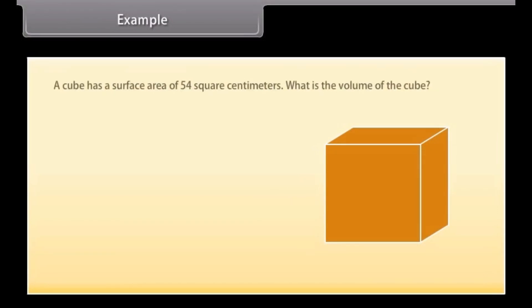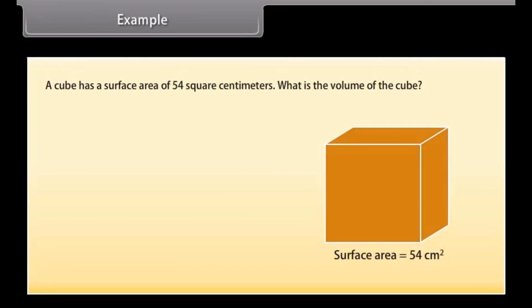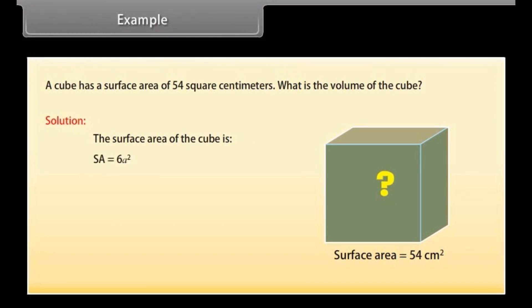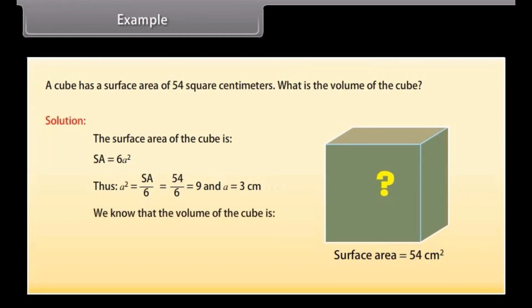Let us now solve an example to find the volume of a cube. A cube has a surface area of 54 cm². What is the volume of the cube? The surface area of the cube is SA = 6A², so A² = SA ÷ 6 = 54 ÷ 6 = 9, and A = 3 cm. Therefore V = A³ = 3³ = 27 cm³.